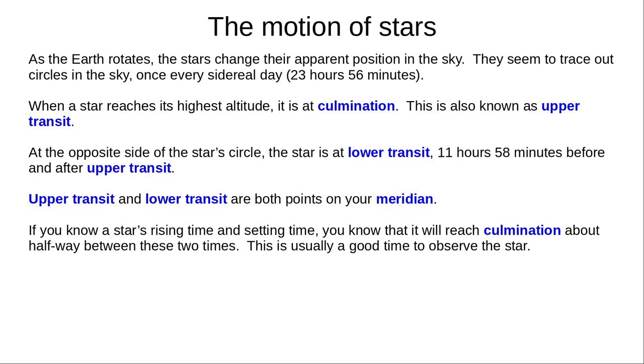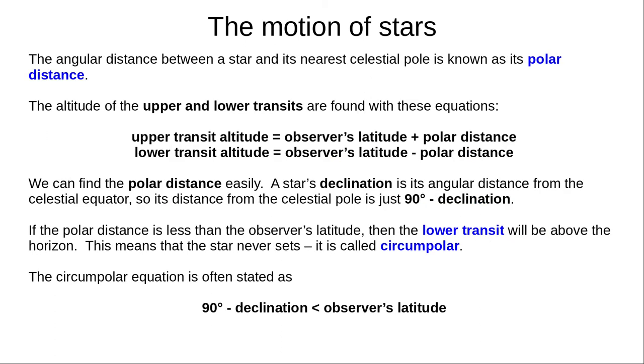Upper transit, or culmination, occurs halfway between a star's rising and setting times. This is a good time to observe a star, since it's highest in the sky. The angular distance between a star and its nearest celestial pole, north or south, is known as its polar distance. We can use this distance to calculate the altitude of upper and lower transits.